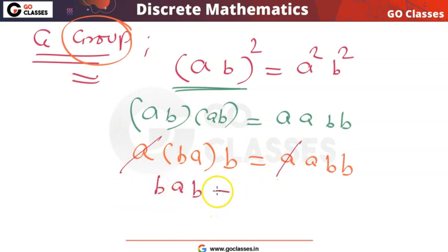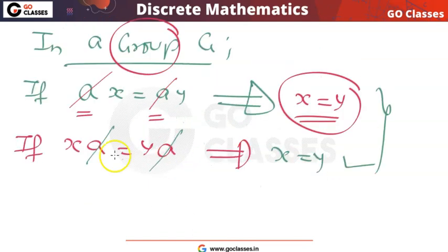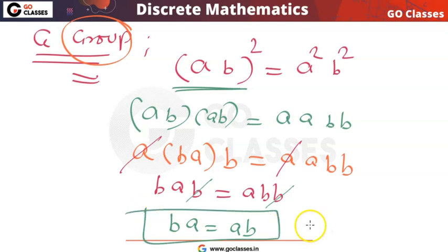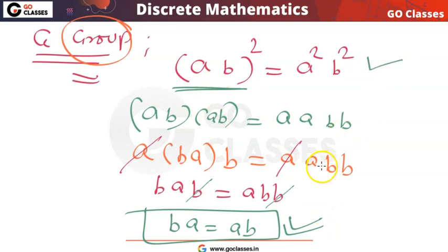After applying left cancellation, we get bab = abb. Now we apply right cancellation — in a group right cancellation is also allowed — and we cancel b from the right. Finally we get ba = ab. So we can say that this group is abelian. Any group which satisfies this property is abelian.